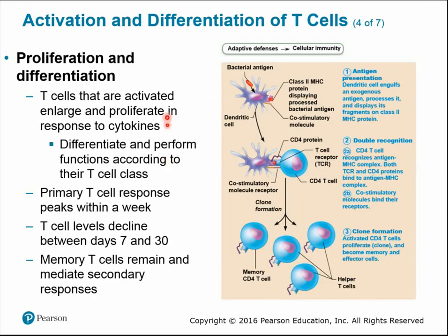Once the T cell has received both signals and been activated, it undergoes proliferation and differentiation — dividing and making clones rapidly. Since we can't wait for the bone marrow to produce new lymphocytes during an active infection, we clone existing ones instead. This process takes about a week to reach peak T cell response, then gradually declines between seven and thirty days after. Memory cells always remain to mediate secondary immune responses.